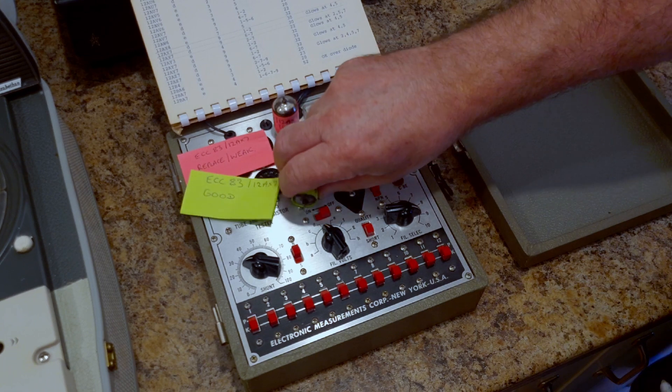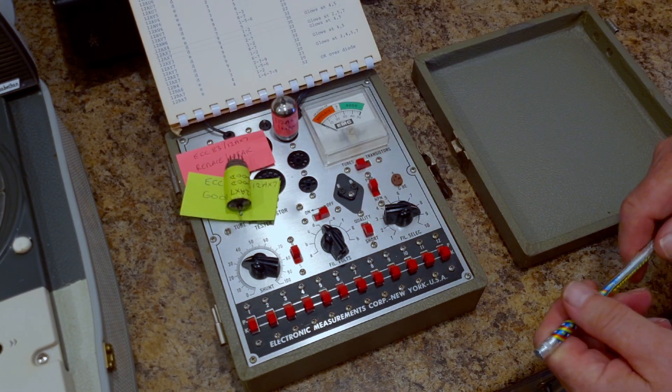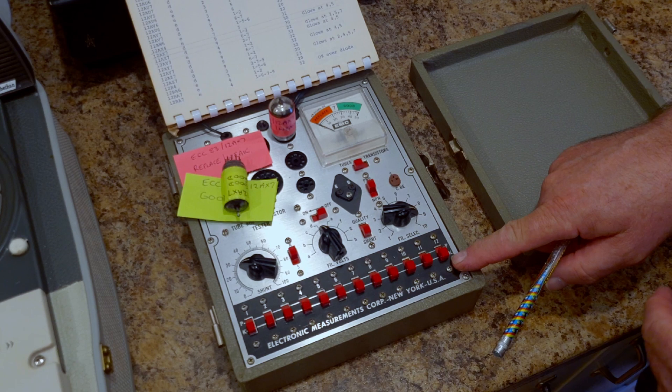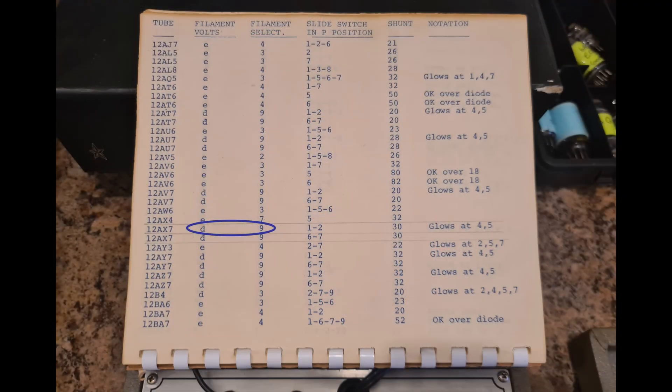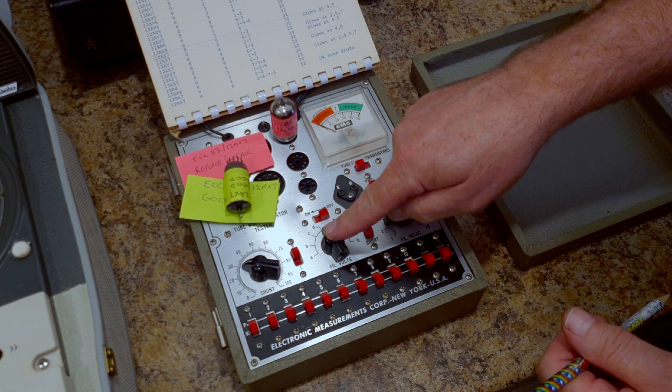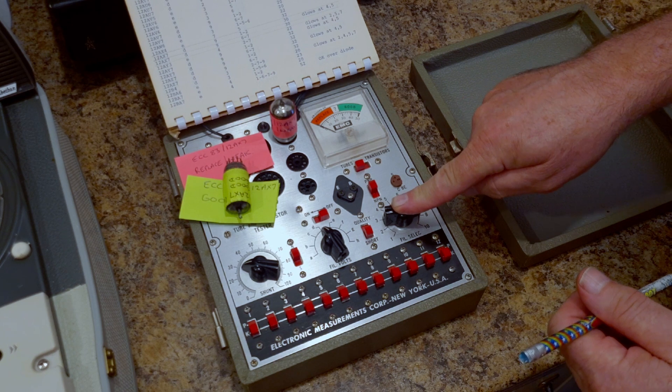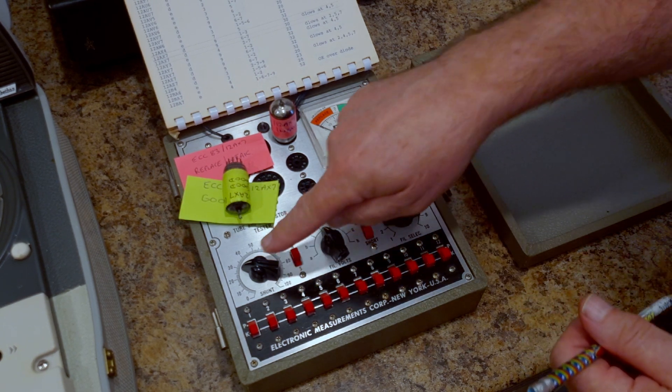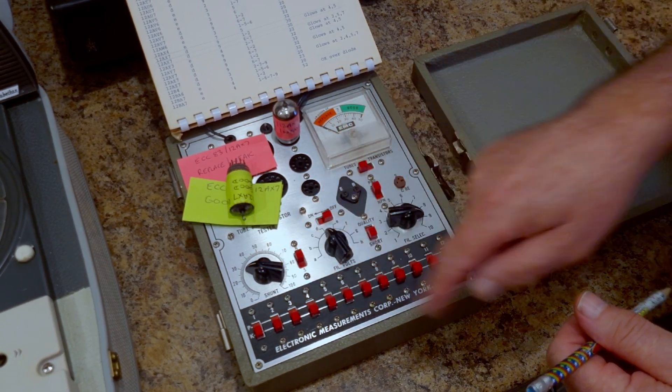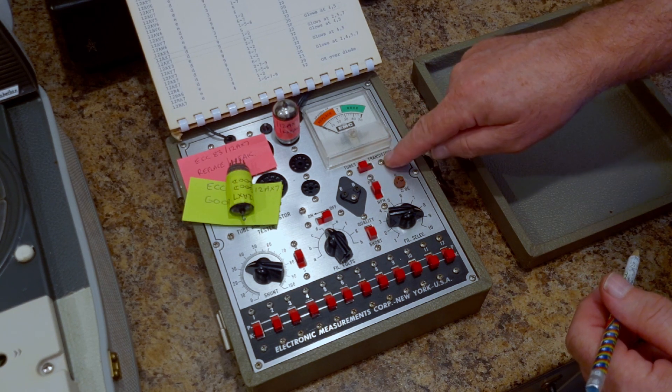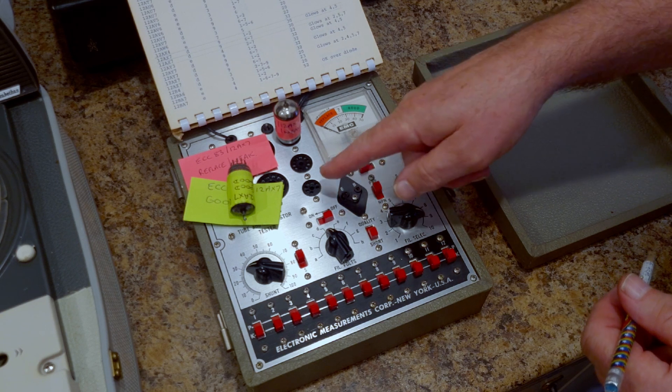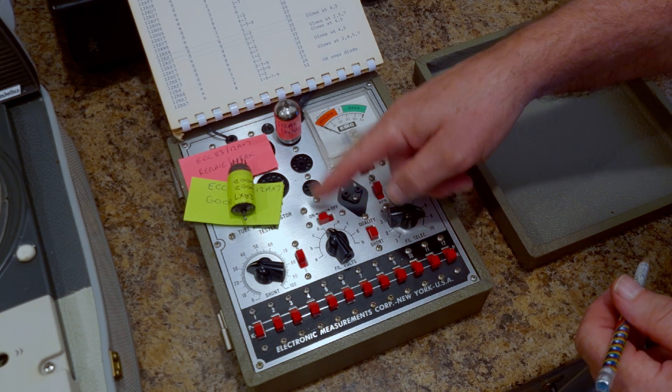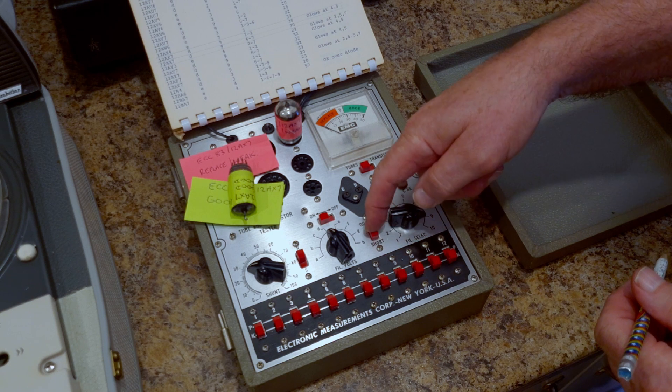To check for shorts, first we need all these switches in the K position. From the manual, the filament volts is on D and the filament select is on 9. The shunt control is on 30, and for this tester it can also test transistors, so it needs to be in the tubes position. Obviously the on-off goes on and the quality-short switch in the short position.